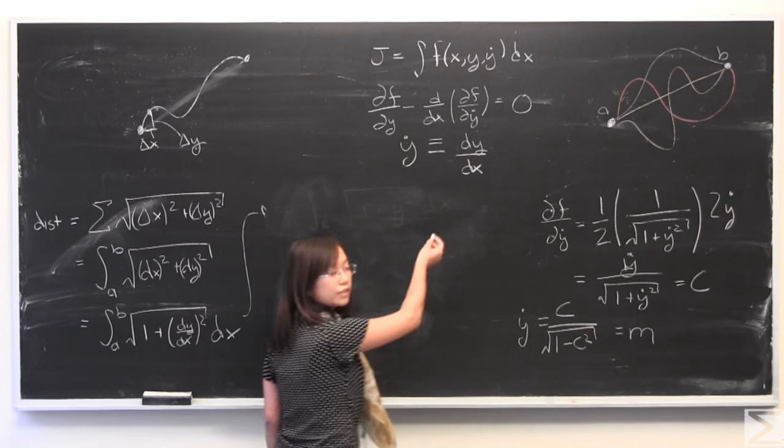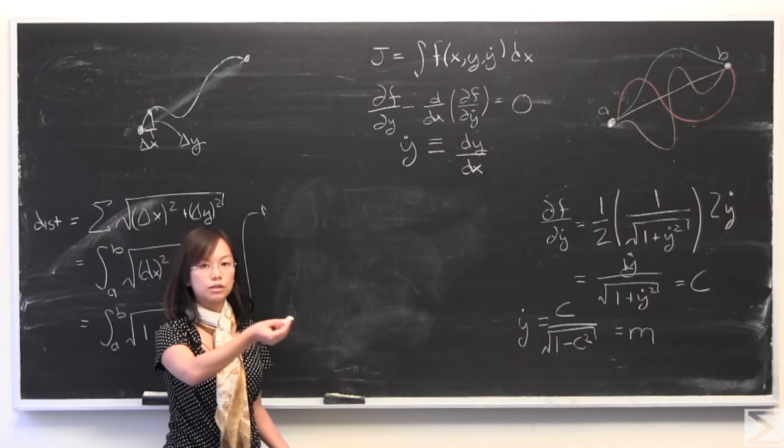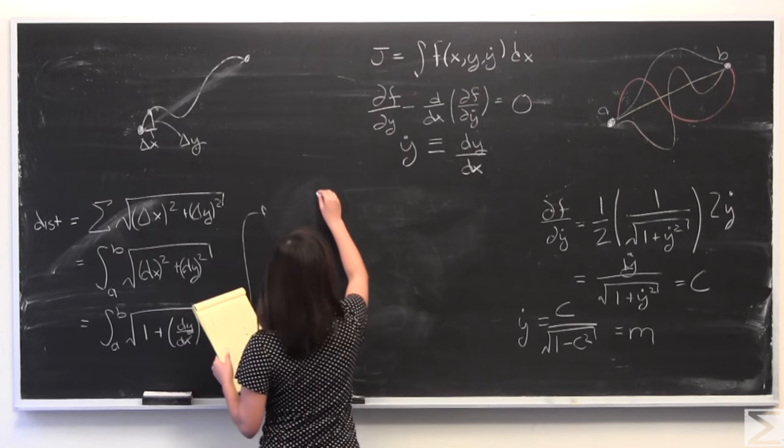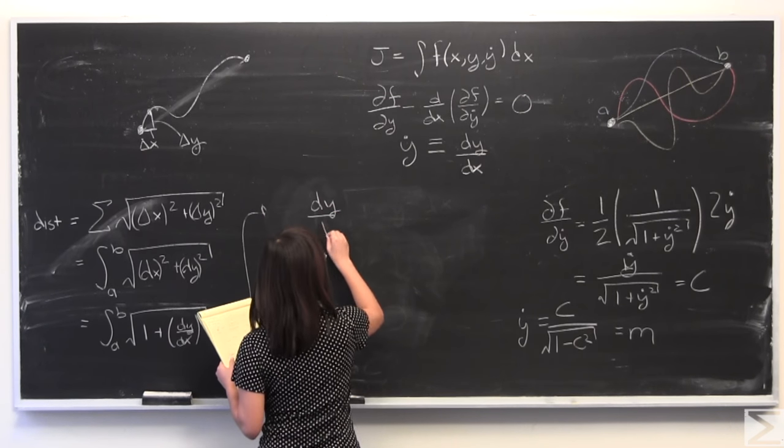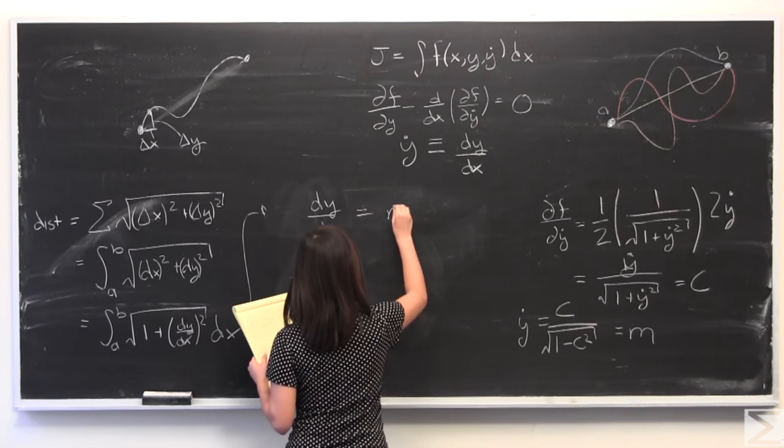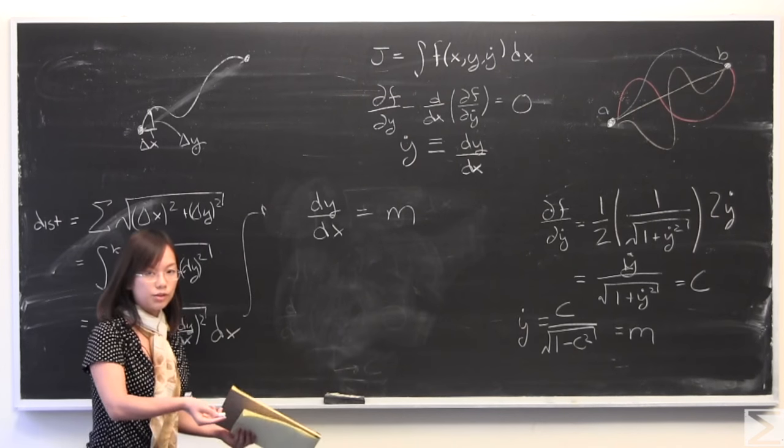OK, I'm going to plug in the definition that we wrote up there. y dot is equal to the total derivative of y with respect to x is equal to m. Separation of variables, you might have seen this before.